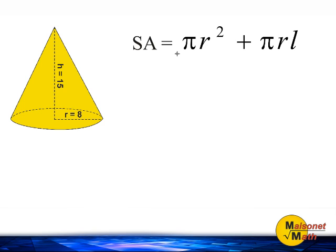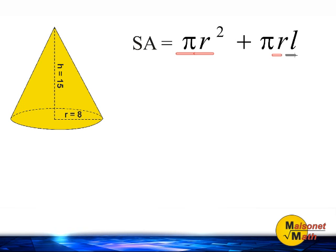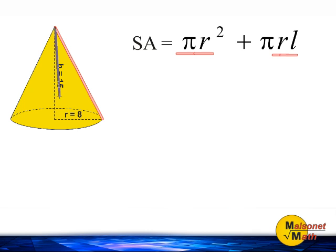We know that the value of pi is 3.14, and the radius is also given in the problem. However, the slant height is not given in our problem. The slant height is the distance from this point here to this point here. They give us the height of the cone, which is 15 units, and they give us the radius of this cone, which is 8 units. However, they do not give us the slant height.